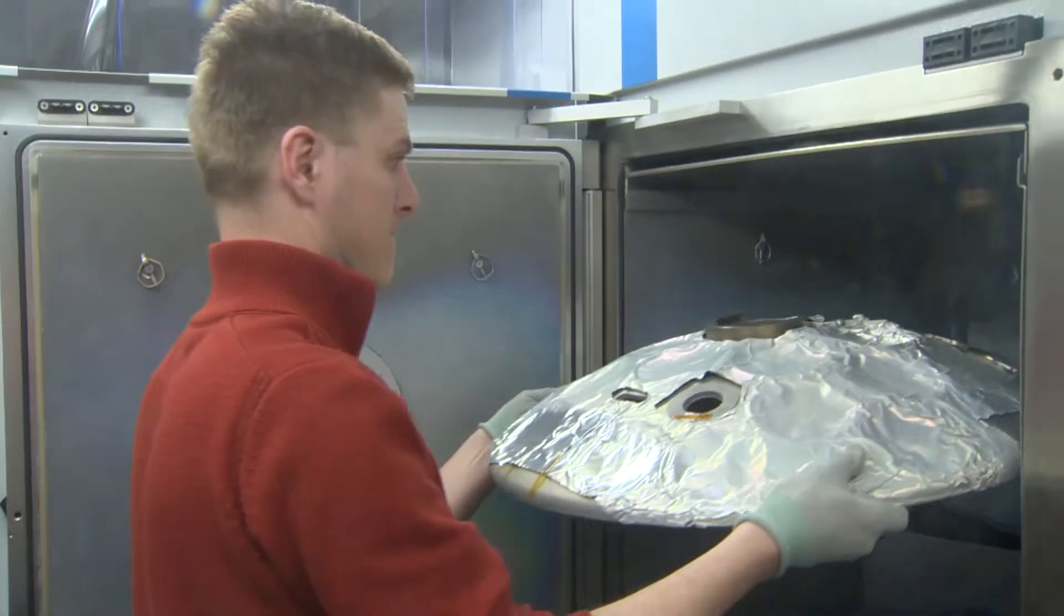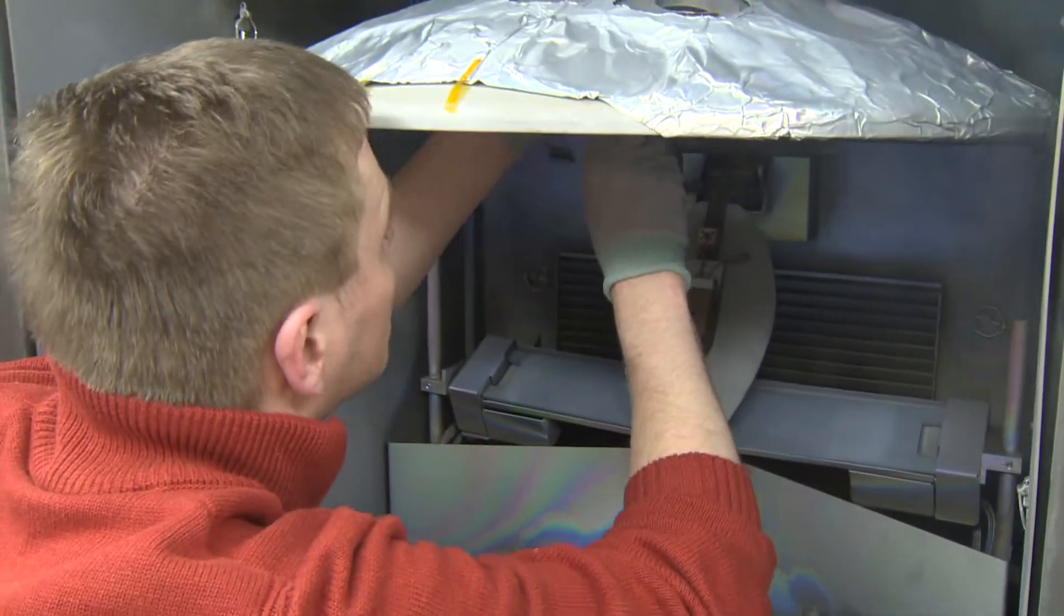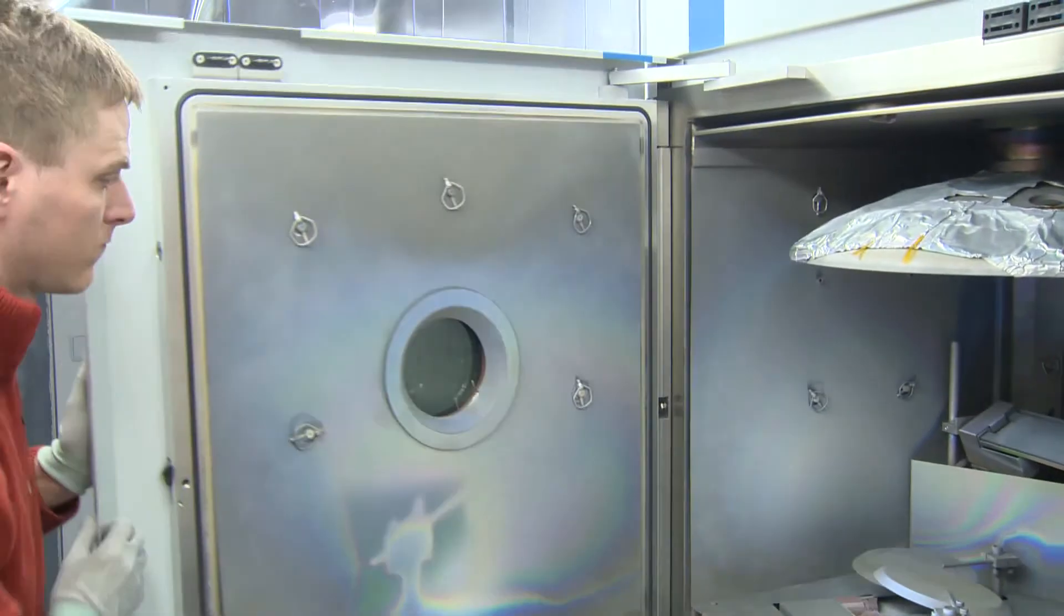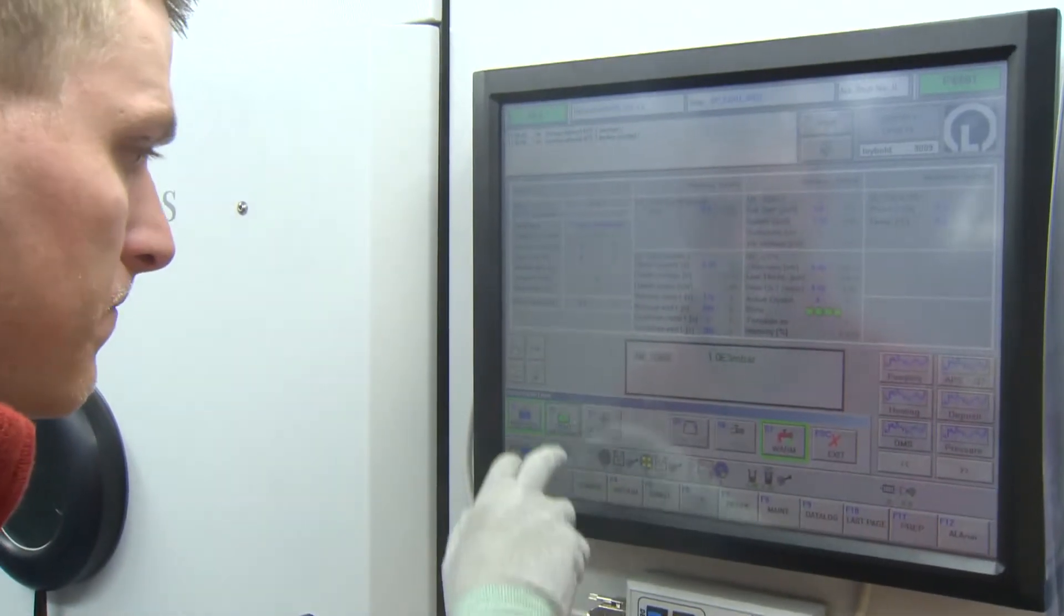Vacuum deposition by electron beam is one of the most widespread methods of preparing thin films of various materials for optical purposes. The thickness ranges from nanometers to micrometers.